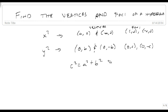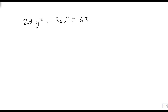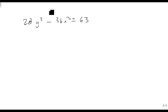So what we need to do is figure out what a is and what b is, and then use those to find c, and that will give us our vertices and our foci. Here we have a slightly difficult problem: 28y squared minus 36x squared equals 63. The problem is that this isn't in standard form.